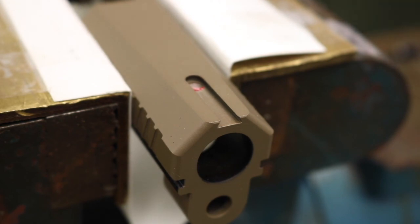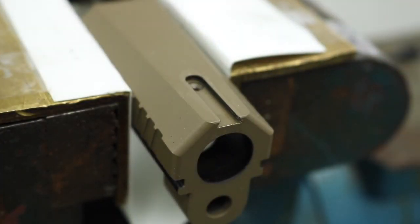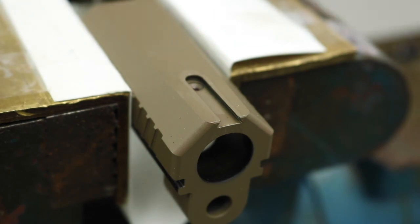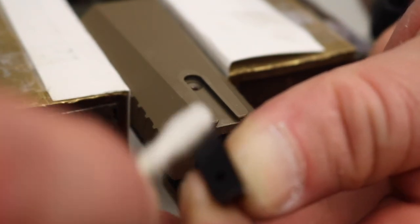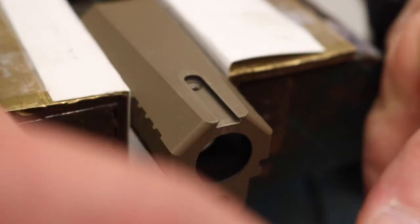Get a Q-tip. And our degreasing agent. We're going to go ahead and hit the dovetail in the slide. As you can see, it's knocking out chunks of the loctite that they used from the factory. Take the other end and a little more degreasing agent, and we're going to clean the contact surfaces on the front sight.